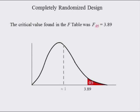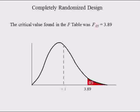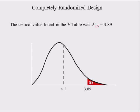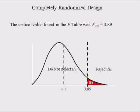The F critical value, F alpha, equals 3.89, splits the distribution such that the probability of being greater than 3.89 is equal to 0.05 — the significance level, or the red shaded area. The critical value also defines the do-not-reject-the-null and reject-the-null regions.